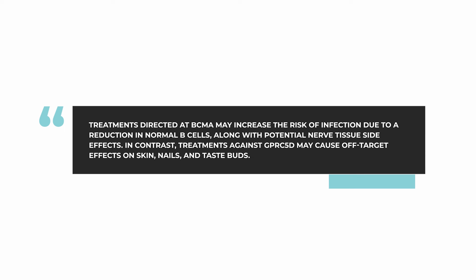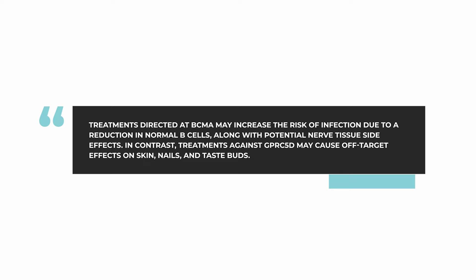For the patient, one of the main things to be aware of is the difference in side effects with these treatments. Treatments directed against BCMA tend to produce an increased risk of infection, because there is a reduction in normal B cells in the bone marrow and elsewhere. These are called off-target effects. There are also side effects against nerve tissue, which can cause neuropathy.